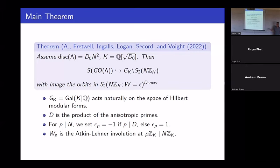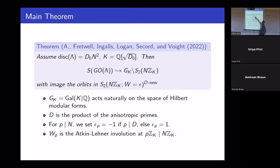Is D and D₀ the same? No — the notation is terrible. Both are discriminants but of different things: D₀ is the discriminant of the underlying field, and D is the discriminant of the quaternion algebra. If D₀ equals 1, so we're in the square discriminant case, then S should be thought of as Q×Q — a quadratic étale algebra — and instead of Hilbert modular forms one gets a tensor product of spaces of classical modular forms. That's why we were seeing classical modular forms in the square discriminant case.